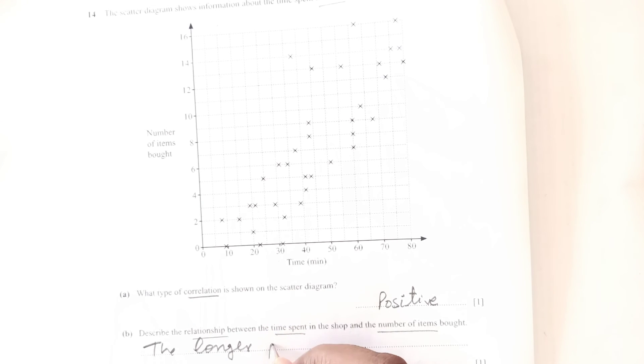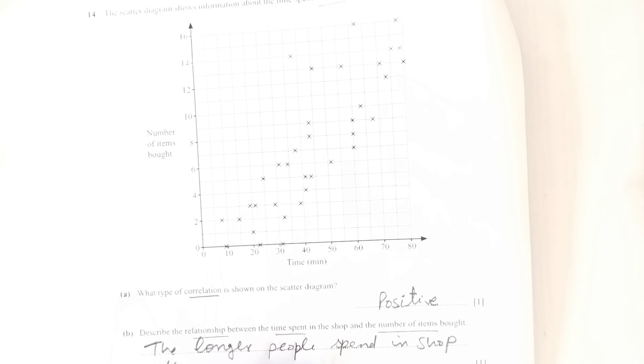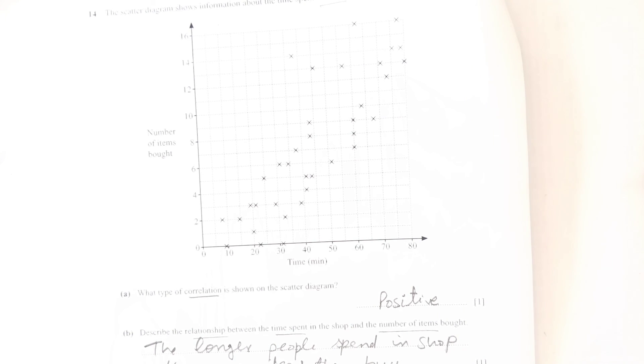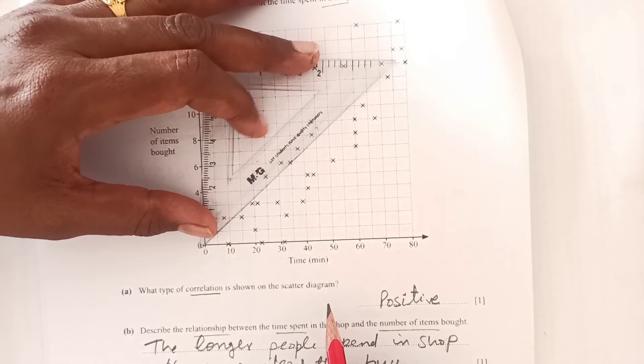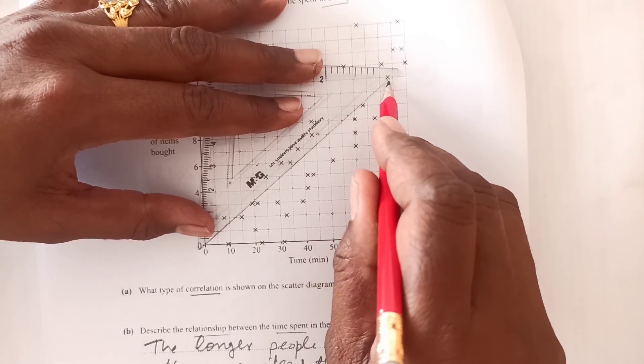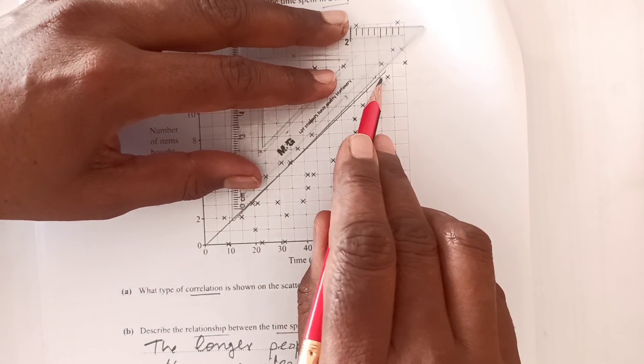Describe the relationship between the time spent in the shop and the number of items bought. As time is more, people are buying more items. So we can say the longer people spend in the shop, the more items they buy. Then draw a line of best fit on the scatter diagram. It should be somewhere in the middle of all these points where most points are near the line.